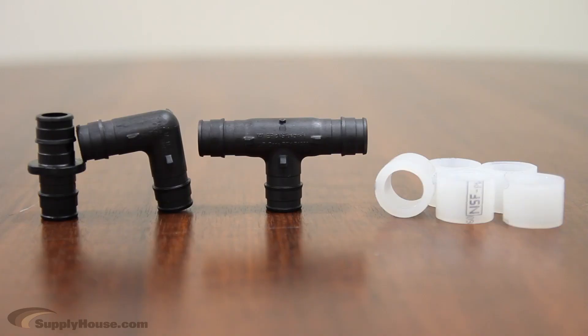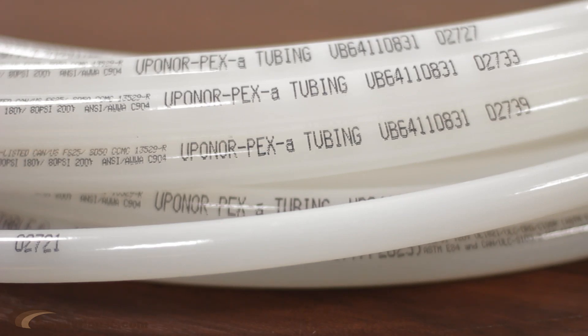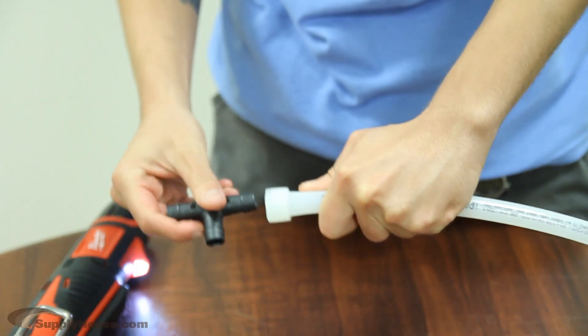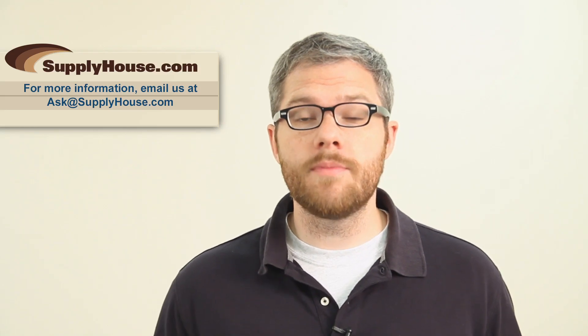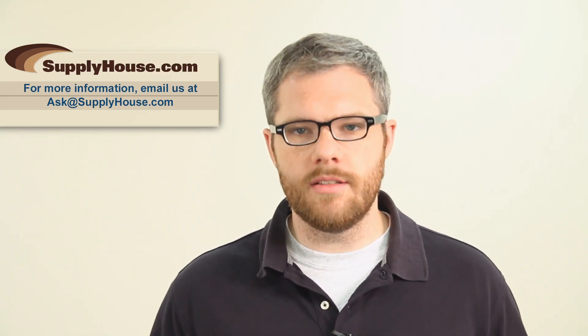Upanore also backs its EP products with a 25-year limited warranty when used with Upanore Aquapex tubing and Propex fittings and installed by an Upanore trained contractor. For more information, visit our website or email us. Thank you.